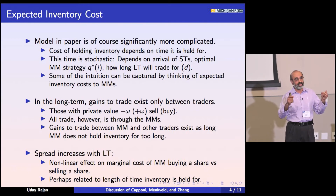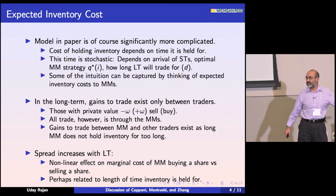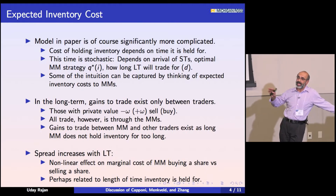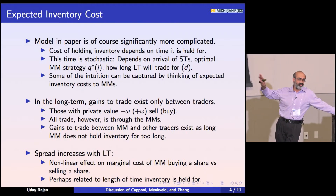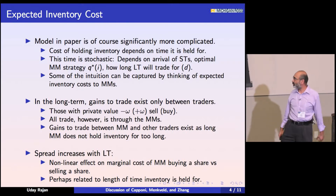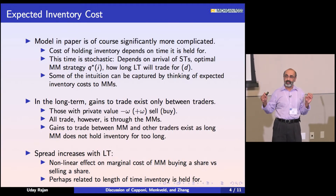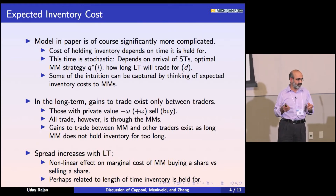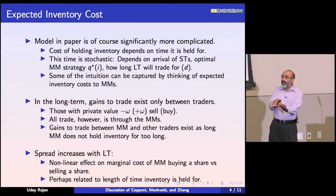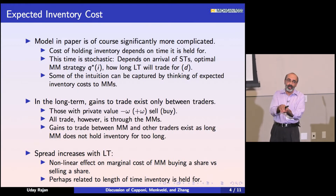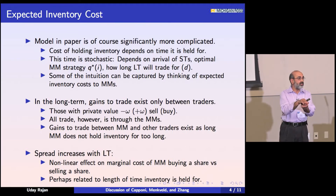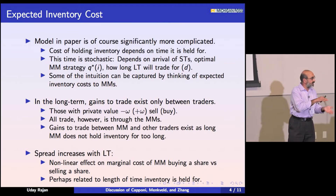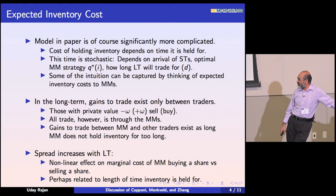The long-term gains to trade are amongst the traders — some people have a private value plus Omega so they want to buy, and some have a private value minus Omega so they want to sell. They're not allowed to trade with each other; all trade in this model is happening through the market makers. In the short term, the gains to trade between the market makers and other traders — the market makers have a private value of zero. Because of these inventory costs, if we ask the market makers to hold this inventory for too long, we exhaust the gains to trade between the traders and the market makers.